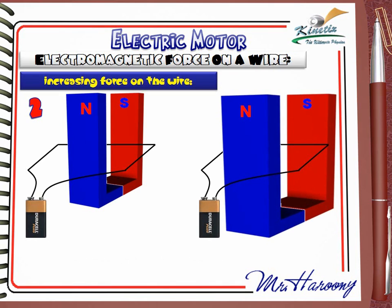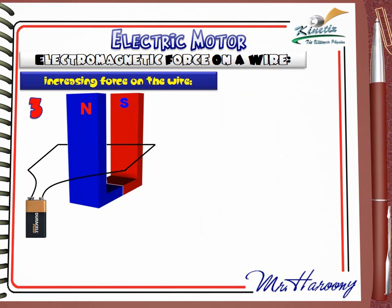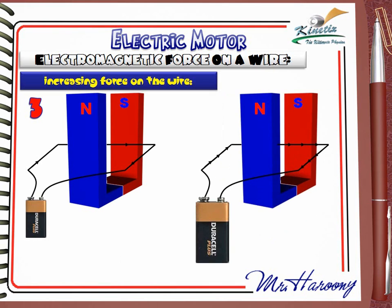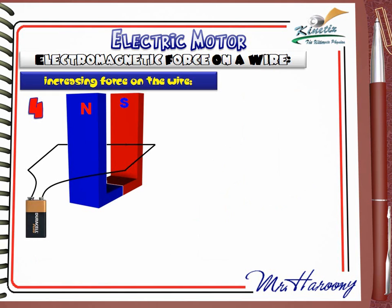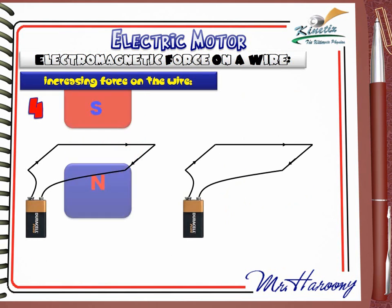Change 2: Replace the magnet with a stronger one. This increases the strength of the magnetic field on the wire, and hence the force gets stronger. Change 3: Replace the battery with a stronger one. A stronger battery produces a larger current, so the force on the wire is increased. In summary: use a stronger magnet, or increase the current intensity.